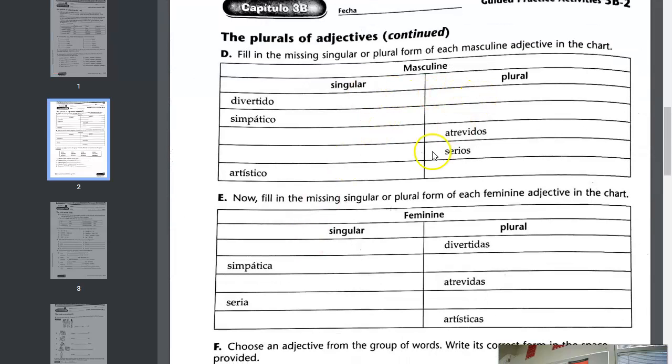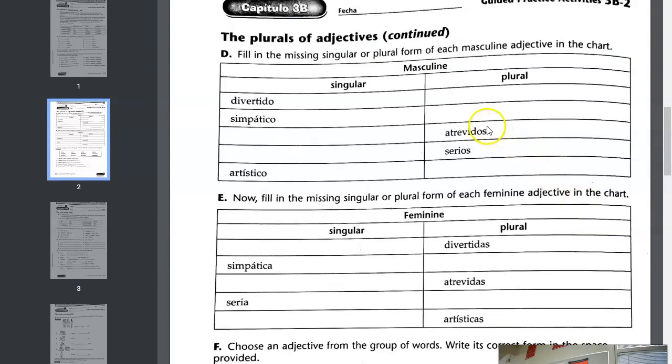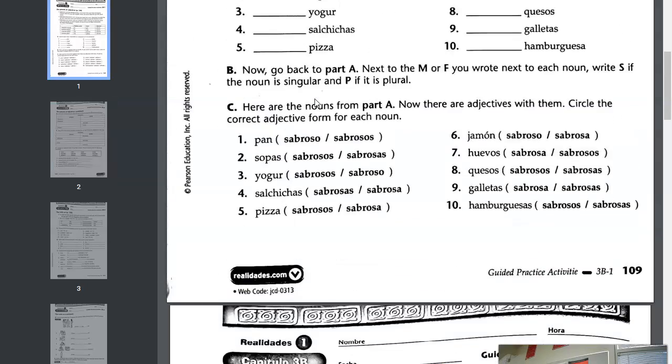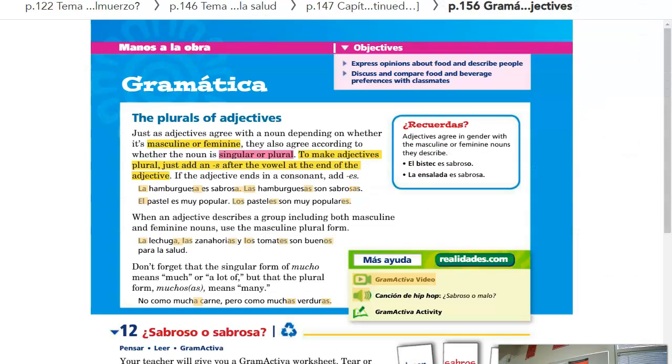For this chart, you are using the information up above here to fill in the missing pieces. A plural form of divertido. Again, all we need to do is what? Add an S, right? To make adjectives plural, all we need to do is add an S.